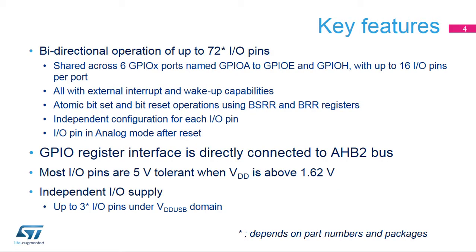The General Purpose I/O ports provide bidirectional operation according to the input memory map. I/O ports are directly connected to the AHB bus. This allows fast I/O pin operations, such as toggling an output, with an independent configuration for each I/O pin.